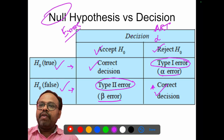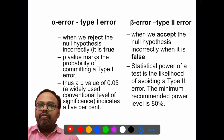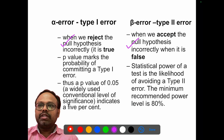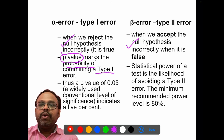A useful mnemonic is ART: alpha error is rejecting the null hypothesis when it is actually true. The reverse is beta error — accepting the null hypothesis when it is false. The magical word p-value used in research is actually the probability of committing this type 1 error or alpha error.